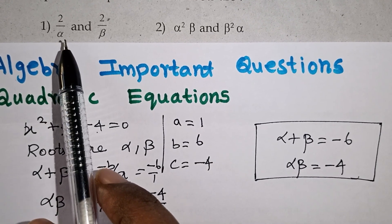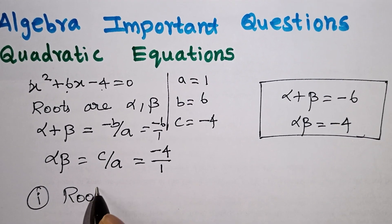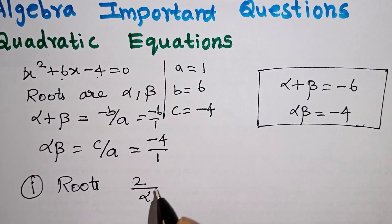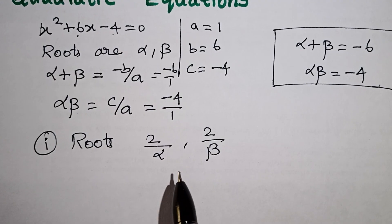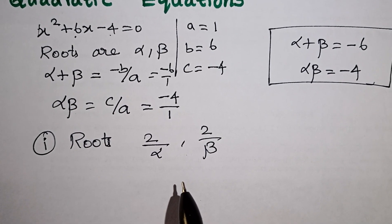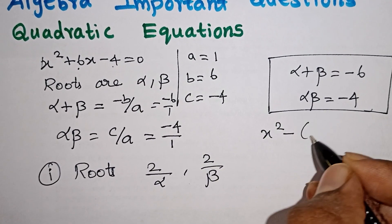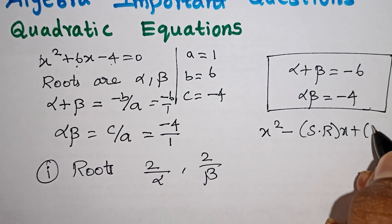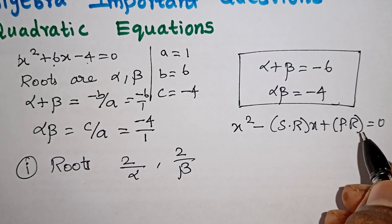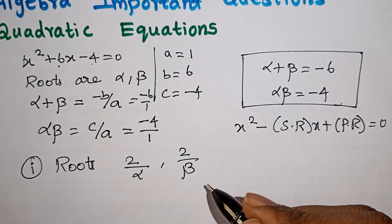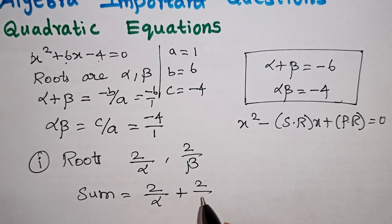For the first question, the roots are 2/alpha and 2/beta. To find the quadratic equation, we need the sum and product of the roots. The basic quadratic equation form is: x² minus (sum of roots)x plus (product of roots) = 0. First, we find the sum: 2/alpha plus 2/beta.